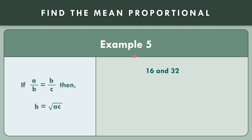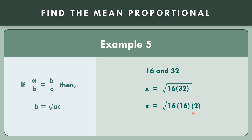For number 5, find the mean proportional of 16 and 32. So x is equal to the square root of 16 times 32. The factor of 32 having a perfect square is 16, so we have the square root of 16 times 16 times 2. We can see there are two 16s, so that is a perfect square — one 16 comes out. Taking the square root of 16 times 16 gives us 16. The 2 has no pair, so that stays as square root of 2. The final answer is 16 square root of 2.